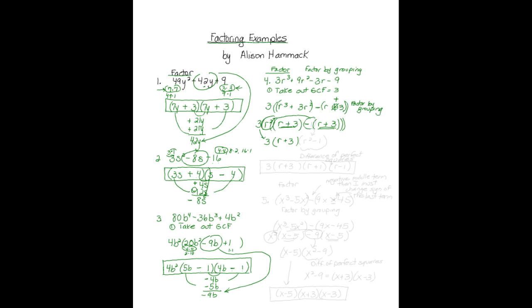The things that are left — r squared and minus one — become r squared minus one, which is my second factor. But I see that r squared minus one is the difference of perfect squares, so I have to keep factoring. This factors into r plus one times r minus one. Then bringing down the rest: r plus three and the three. Now we have our final answer.